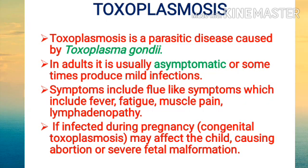Toxoplasmosis is a parasitic disease caused by Toxoplasma gondii. In adults it is usually asymptomatic, or sometimes it produces a mild infection with flu-like symptoms such as fever, fatigue, muscle pain, and lymphadenopathy.